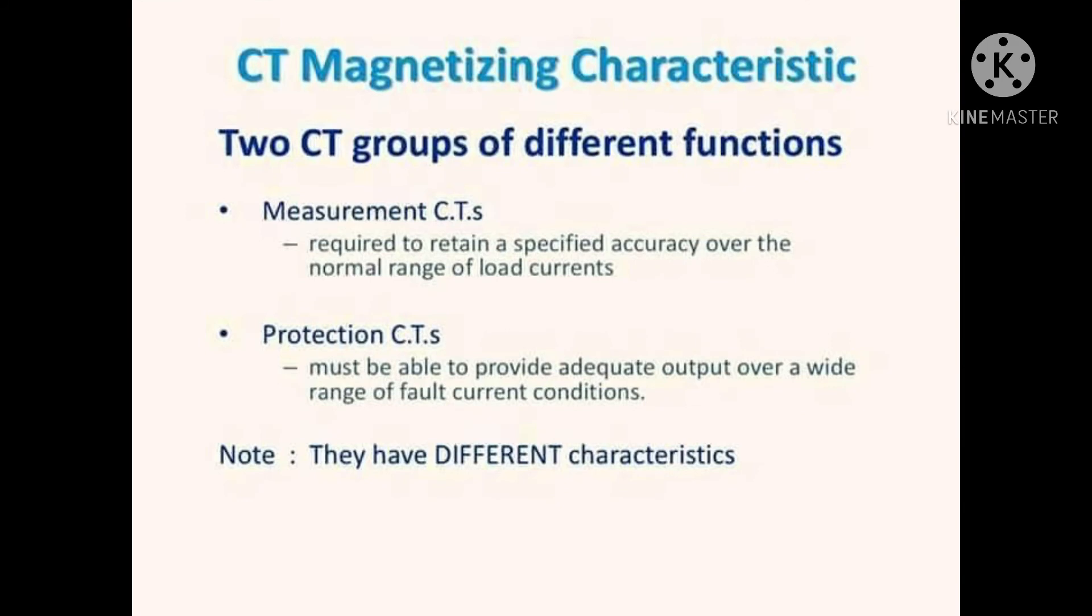Current transformers are used for both metering and protection purposes. By reducing the power system primary current to lower value, CT is used for measuring or metering purposes. By permitting the use of standard current rating for secondary equipment, CT is used for protection purposes.